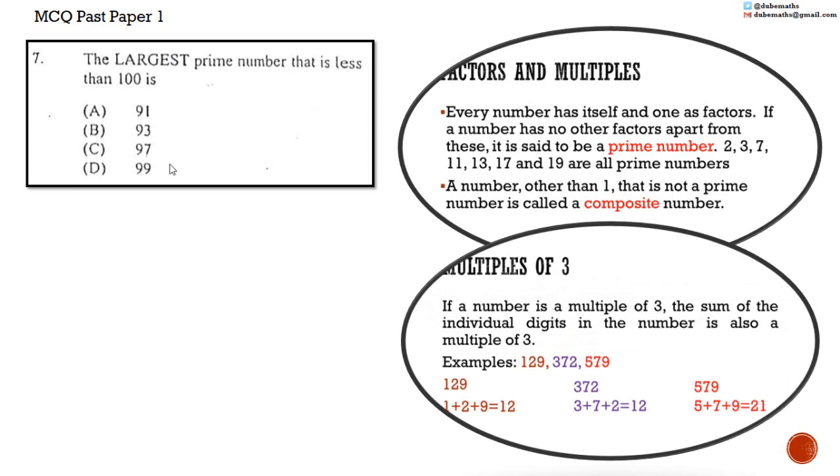In 91, 9 plus 1 is equal to 10. 10 is not a multiple of 3, so 91 is not a multiple of 3. 93: 9 plus 3 is equal to 12. 12 is a multiple of 3, so 93 is also a multiple of 3. Thus, 93 is not a prime number and we can cross it out.